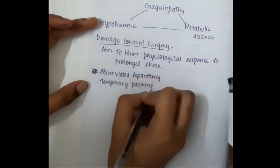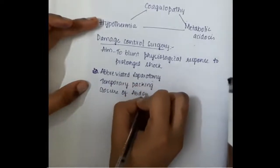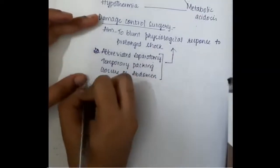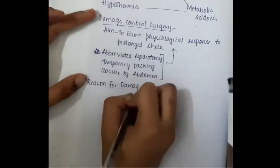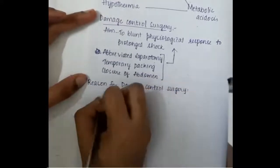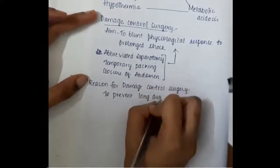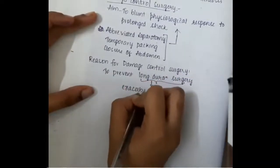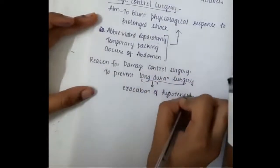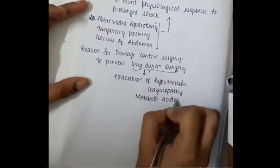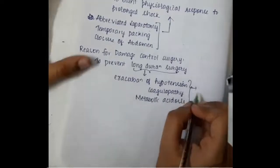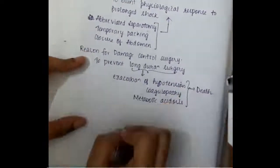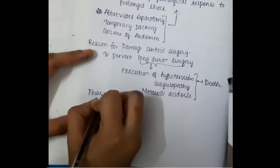Damage controlled surgery is an abbreviated laparotomy where temporary packing is done and the abdomen is closed. It is done to prevent long-duration surgeries, because prolonged surgery causes increased hypotension, coagulopathy, and metabolic acidosis, which can lead to death. So in order to prevent these, we perform damage controlled surgery.